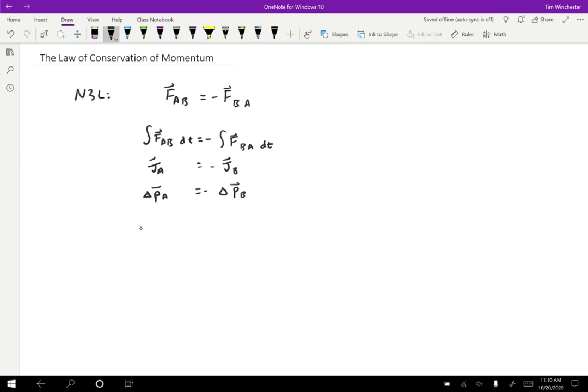Another way to write this is: PA final minus PA initial equals negative PB final minus PB initial. If I move the initial to the right hand side and the final to the left hand side, then I get PA final plus PB final equals PA initial plus PB initial.